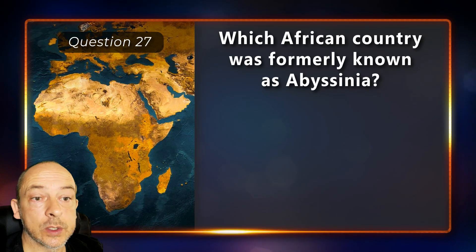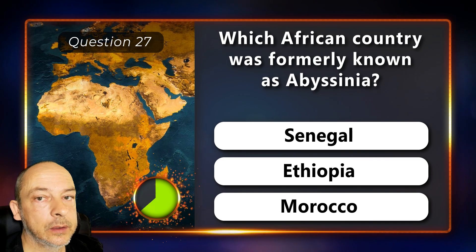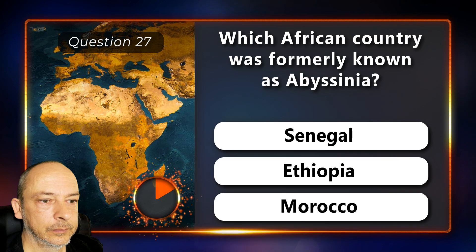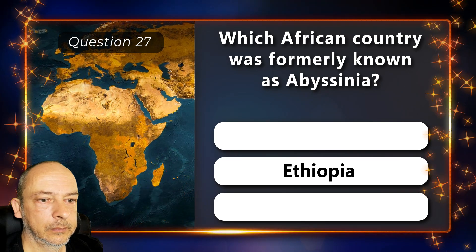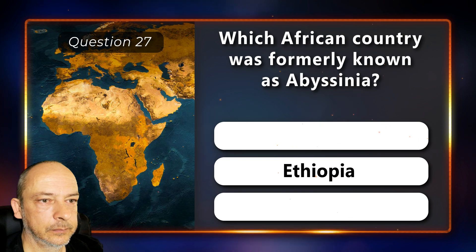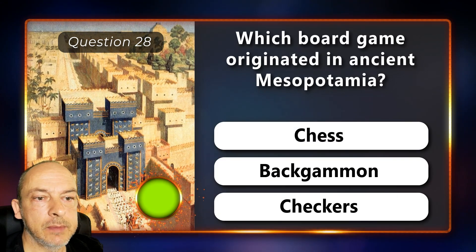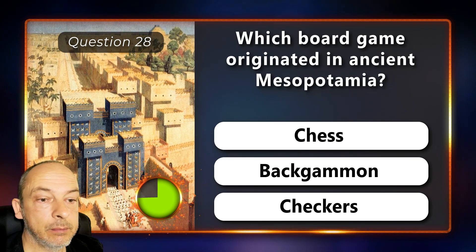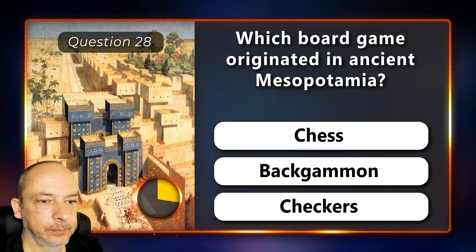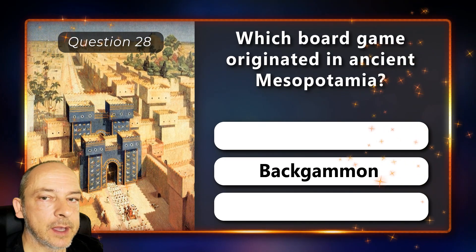Which African country was formerly known as Abyssinia — Senegal, Ethiopia, or Morocco? Ethiopia. Which board game originated in ancient Mesopotamia — chess, backgammon, or checkers? The answer is backgammon.